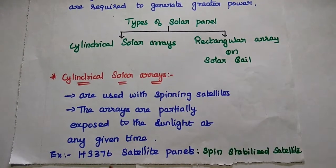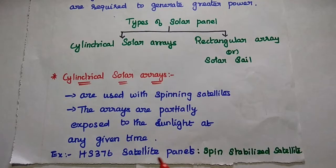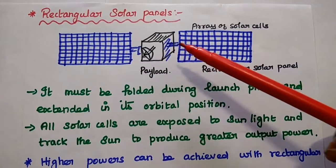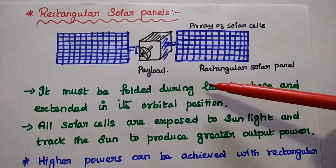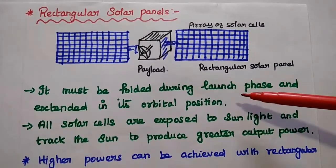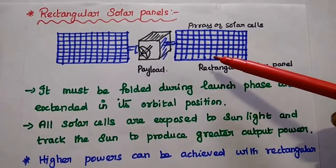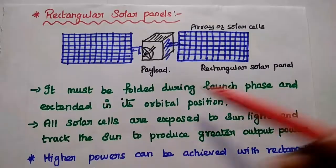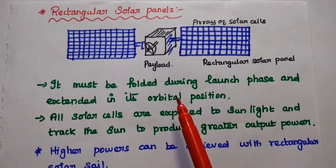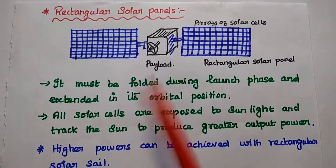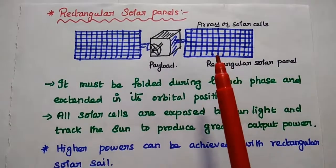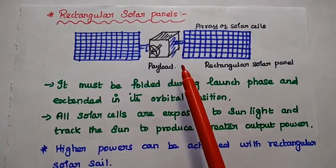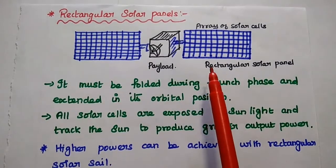An example is the HS376 satellite panel, because this satellite is a spin-stabilized satellite. Next, the rectangular solar panel is widely used in satellite communication systems. It must be folded during the launch phase and extended its wings in its orbital position. All solar cells are exposed to the sunlight and track the sun to produce greater output power. A tracking system is also available along with this rectangular solar panel.